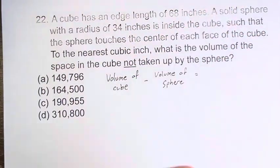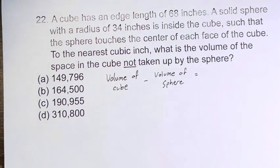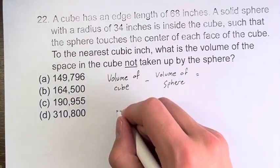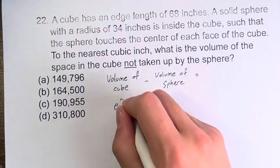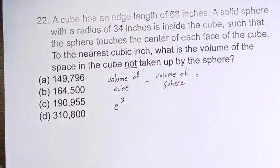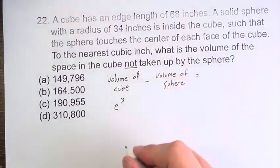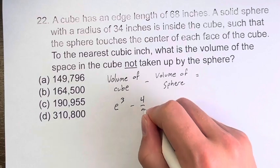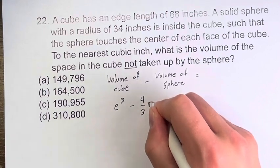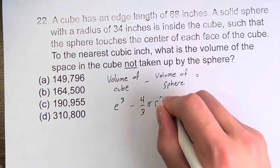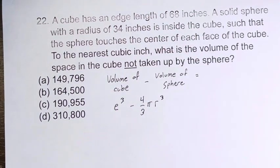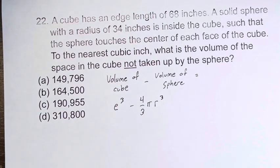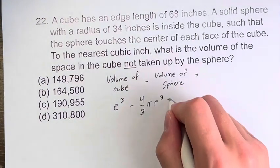How do you find the volume of the cube? It's the edge length cubed. How do you find the volume of the sphere? It's four-thirds pi times the radius cubed. Now we just have to plug these in, solve it, and we'll get our answer.